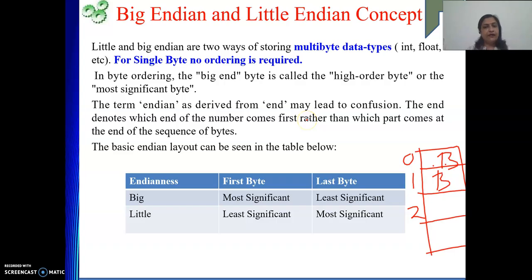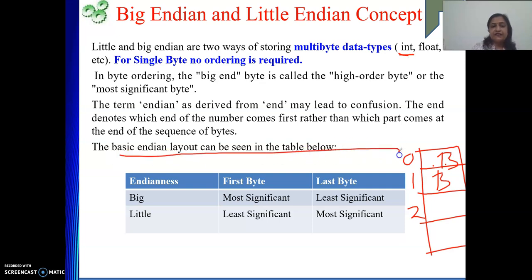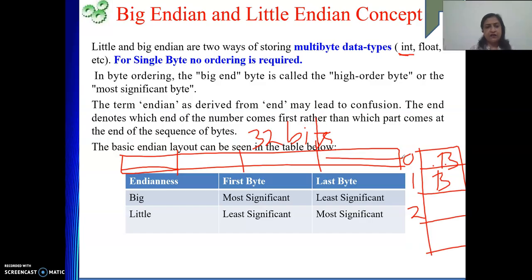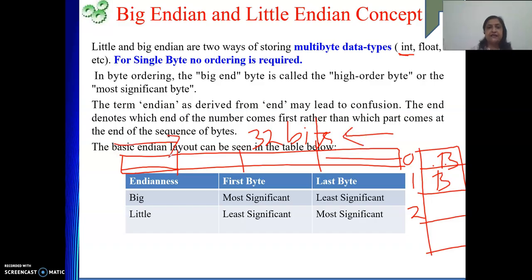If my integer takes four bytes, then this integer consists of four bytes — total 32 bits representing my integer. Now, when I store it in memory, the question is: do I store this byte first, or that byte first? Meaning, do I start storing from this end or that end? That is given by the concept of endianness.